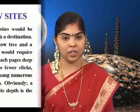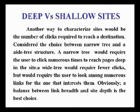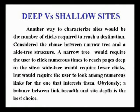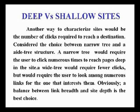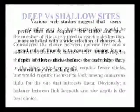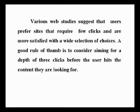Deep versus shallow sites: another way of categorizing sites is by the number of clicks required to reach a destination. A narrow tree requires the user to click numerous times to reach pages deep in the site, while a wide tree requires fewer clicks but presents numerous links to evaluate. A balance between link breadth and site depth is best. Various web studies suggest users prefer fewer clicks and wider choices; a good rule of thumb is to aim for a depth of 3 clicks before the user hits the content they are looking for.